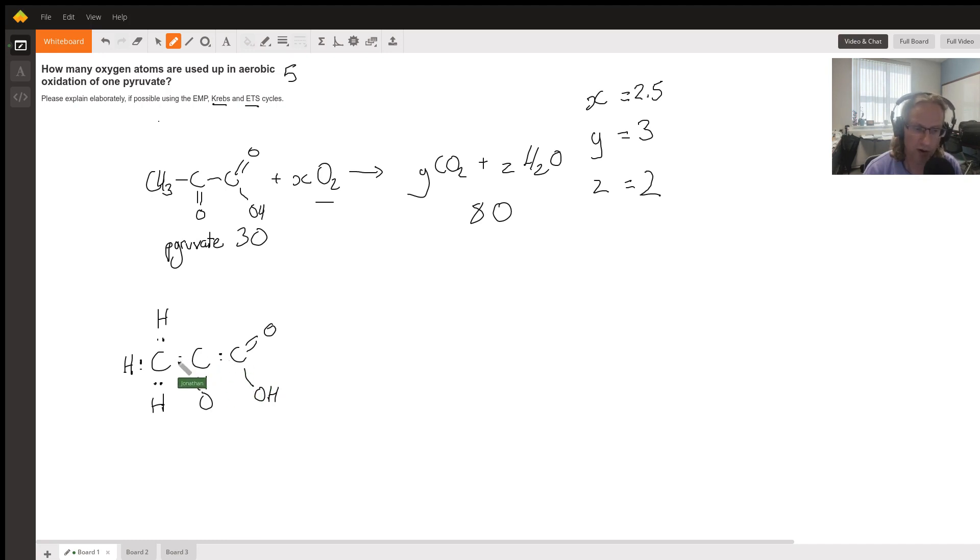So there we go, we drew up the Lewis dot structure of pyruvate showing only those electron pairs that are involved in carbon-carbon bonds or carbon-hydrogen bonds. And if we count up those pairs—one, two, three, four, five—we find that we've got five pairs.